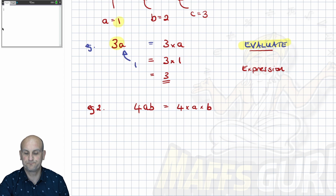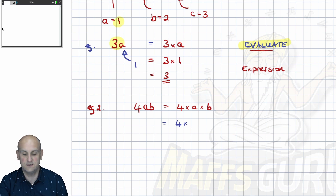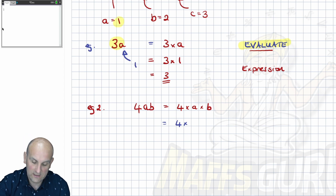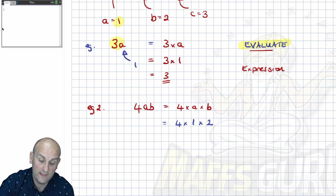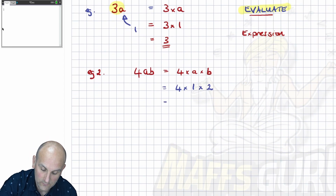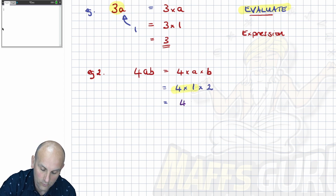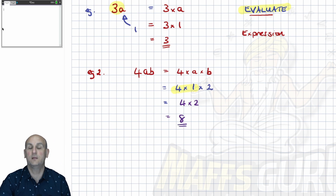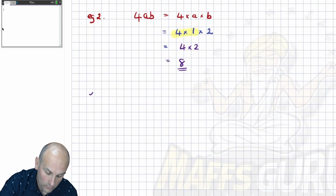Let's do Example 2 and have 4AB. Now all of those are stuck together with kissy kisses, so I'm going to write it out in expanded form first before I substitute — it just makes life a lot easier. The 4 is just a constant, but my value of A is going to change. A is 1 and B is 2. So 4 times 1 becomes 4, times 2 is 8. And there is my answer — ka-ching!